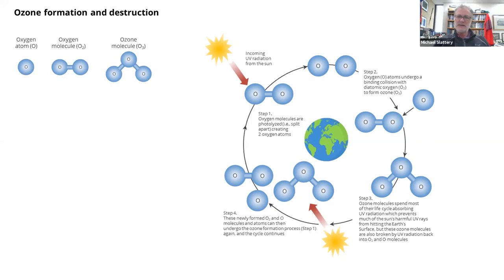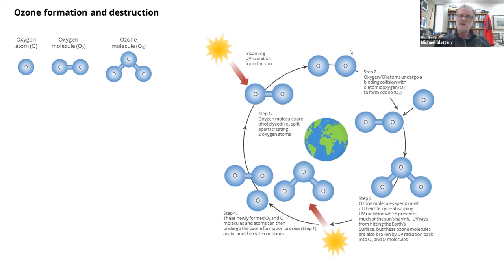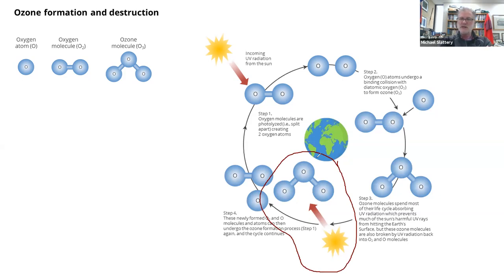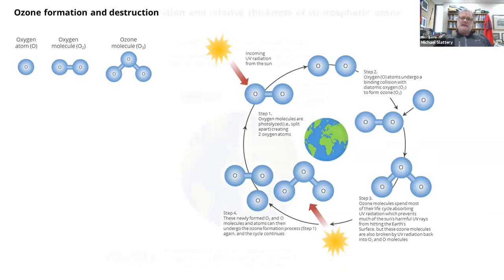Over time, that natural process has built up a concentration of ozone in the stratosphere, and that concentration is what protects us from harmful UV radiation. The job of ozone molecules is to absorb that UV radiation before most of it reaches the surface of the earth.